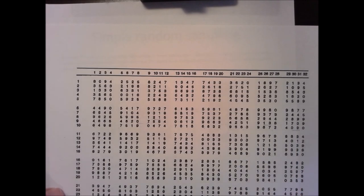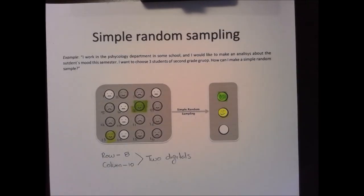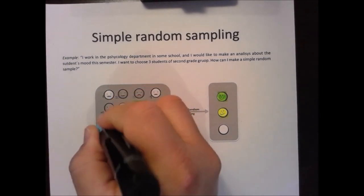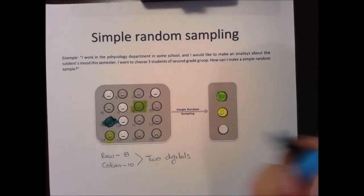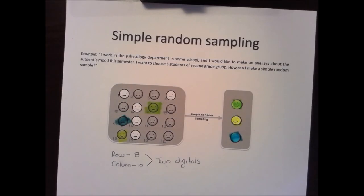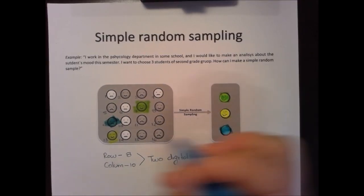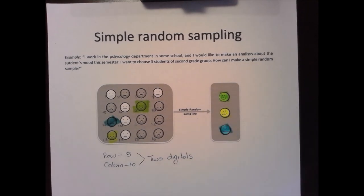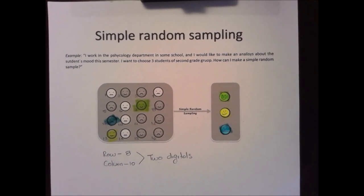Do we have a student with number 09? Yes, we do. That is the third student selected, and this student is sad. So this is the simple random sampling.